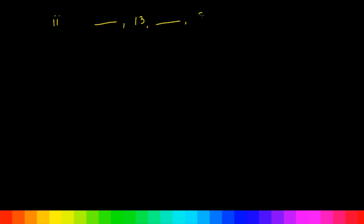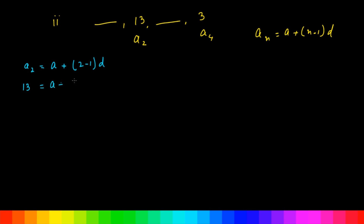Part 2: dash, 13, dash, 3. Here two terms are given: A2 = 13 and A4 = 3. Using the formula An = A + (N - 1)D, we get A2 = A + D = 13, which is our first equation. And A4 = A + 3D = 3, which is our second equation.